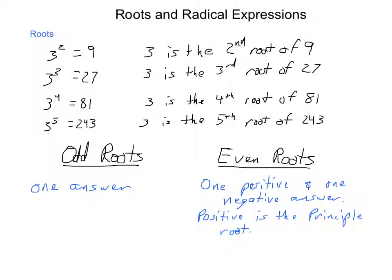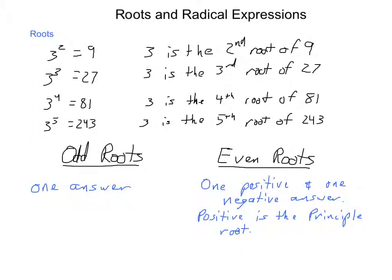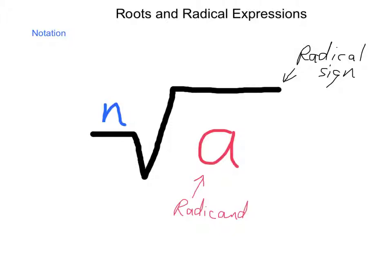Bear in mind with odd roots that there is only one answer. The notation used when looking at roots has different parts. This is called the radical sign, and it is used for all forms of roots. The number or expression underneath the radical sign is called the radicand, and it can have operations happening within it — addition, subtraction, multiplication, or division — all underneath the radical sign. The number that sits out on the little shelf is called the index.